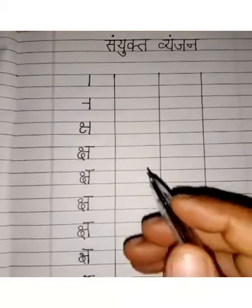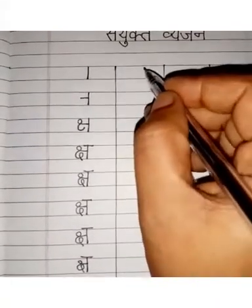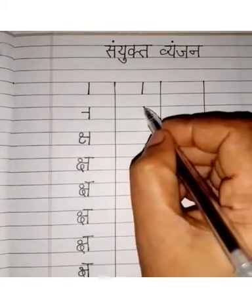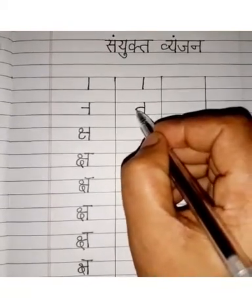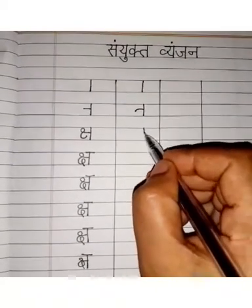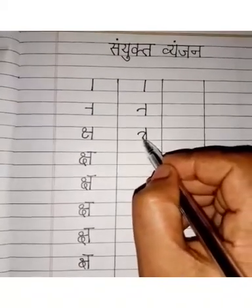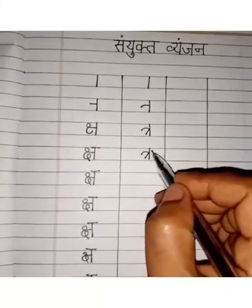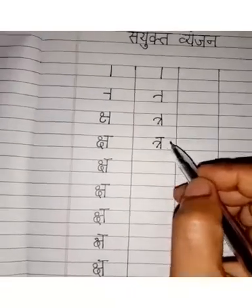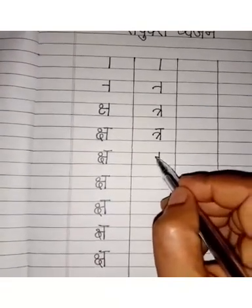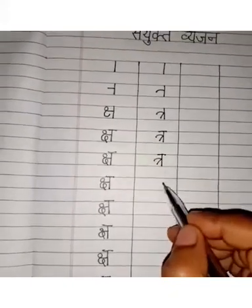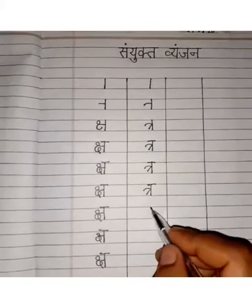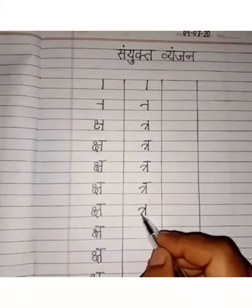Now you have to write. Look at the step — you have to draw first a standing line, and then do like this. After that, draw a sleeping line on it. You have to speak: Throw. Throw. Throw.